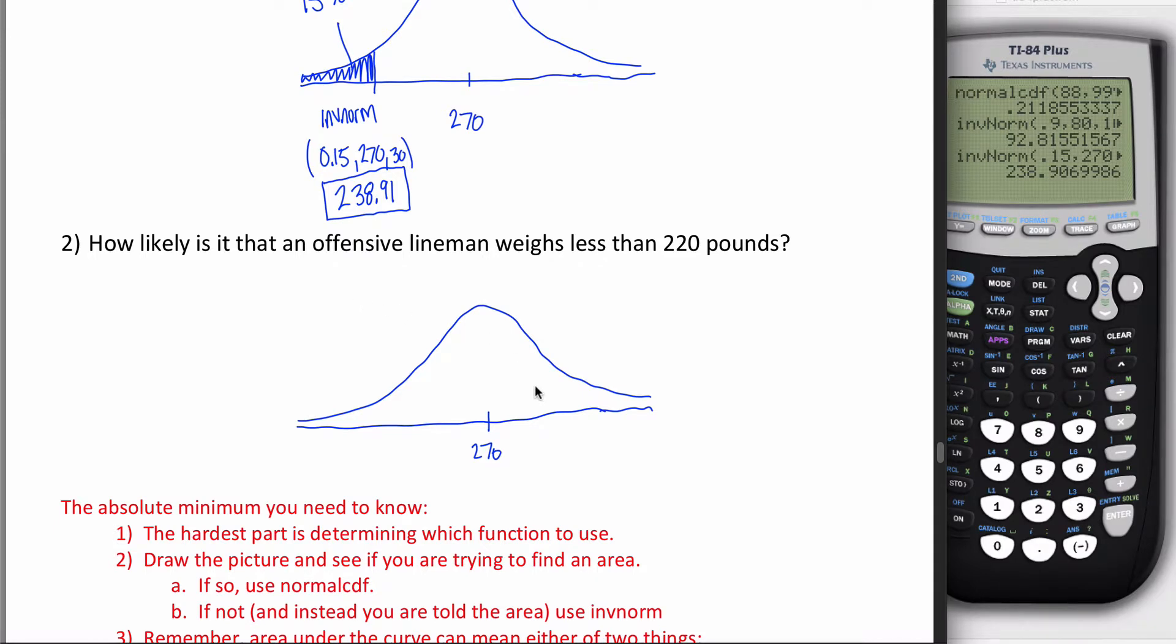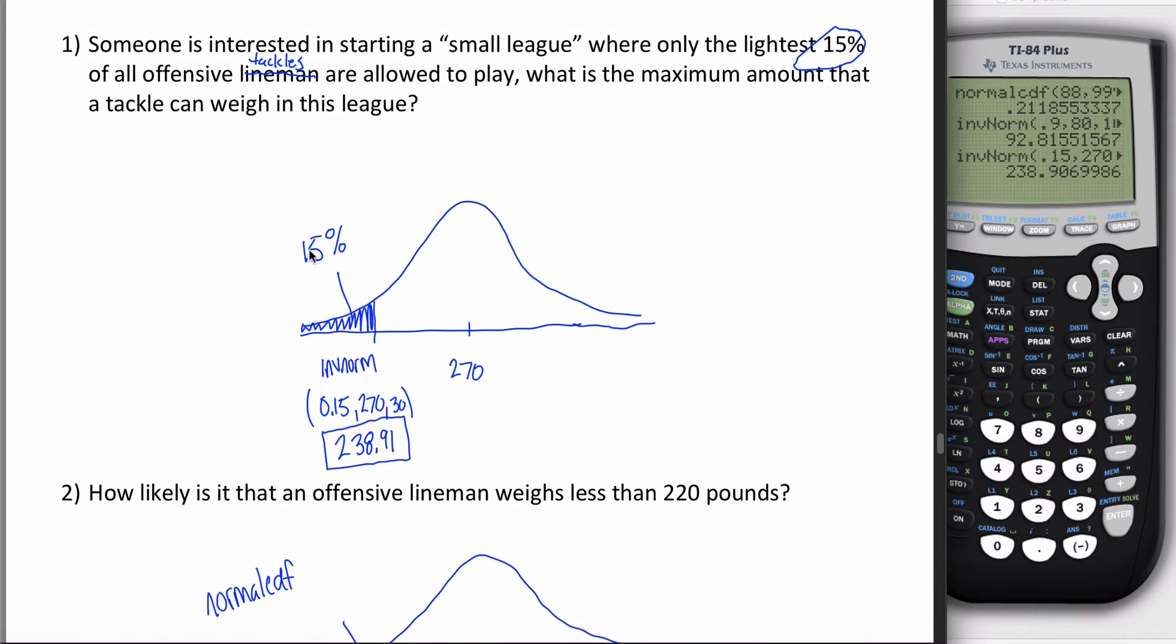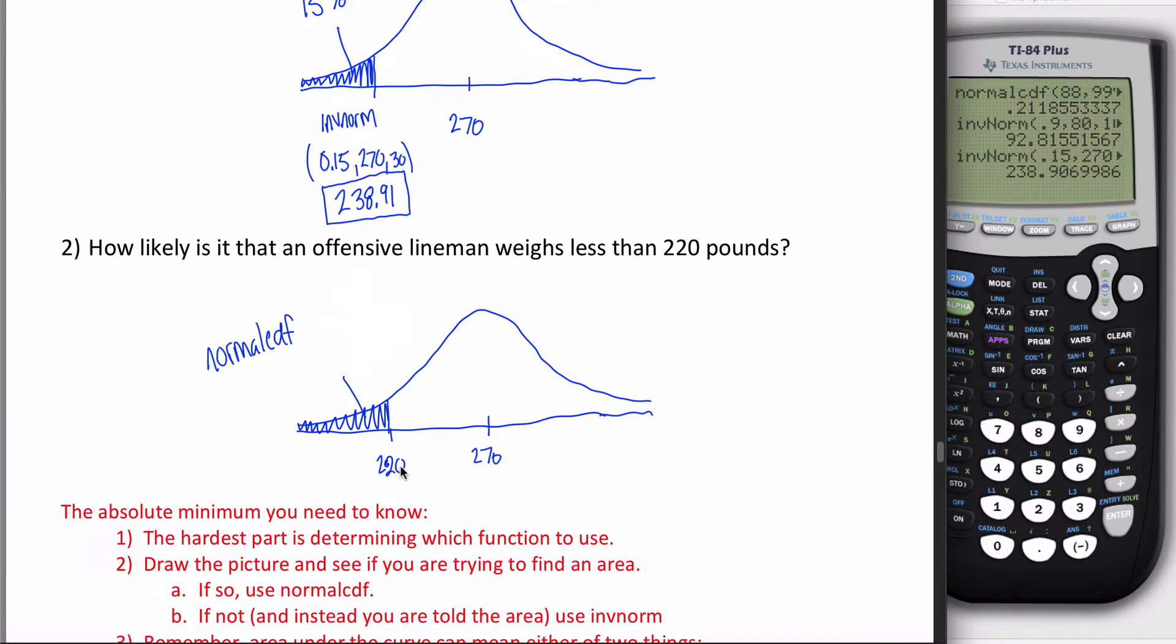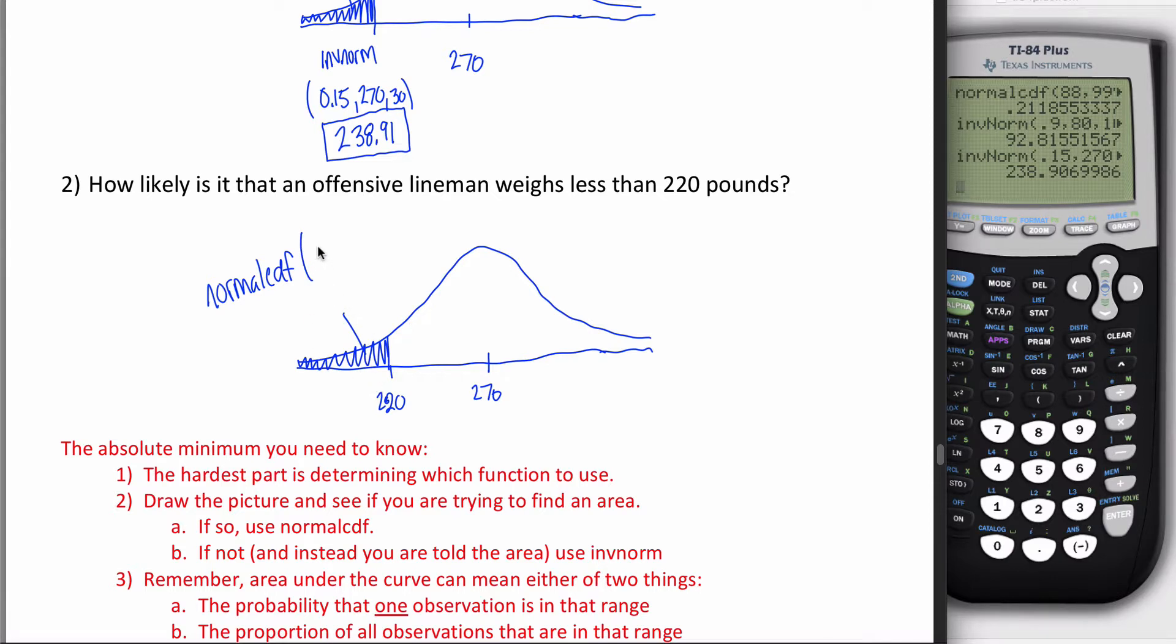How likely is it that an offensive lineman weighs less than 220 pounds? Now if I wanted to, I could count up and down by standard deviations: 240, 210, 180. I'm going to throw 220 in my picture and shade to the left of it. It's asking me to find this area. Find this area - it's normalCDF. Any time you're trying to find the area, it's normalCDF. We didn't try to find the area up here. The area was given in the problem - this 15% was given. That is the area.